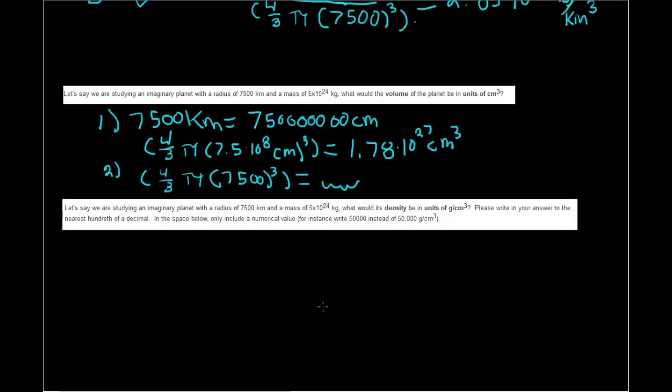So let's move forward to the final question here. Let's say we are studying an imaginary planet with a radius of 7,500 kilometers and a mass of 5 times 10 to the 24th kilogram, the same sort of thing. What would its density be in units of grams per centimeters cubed?